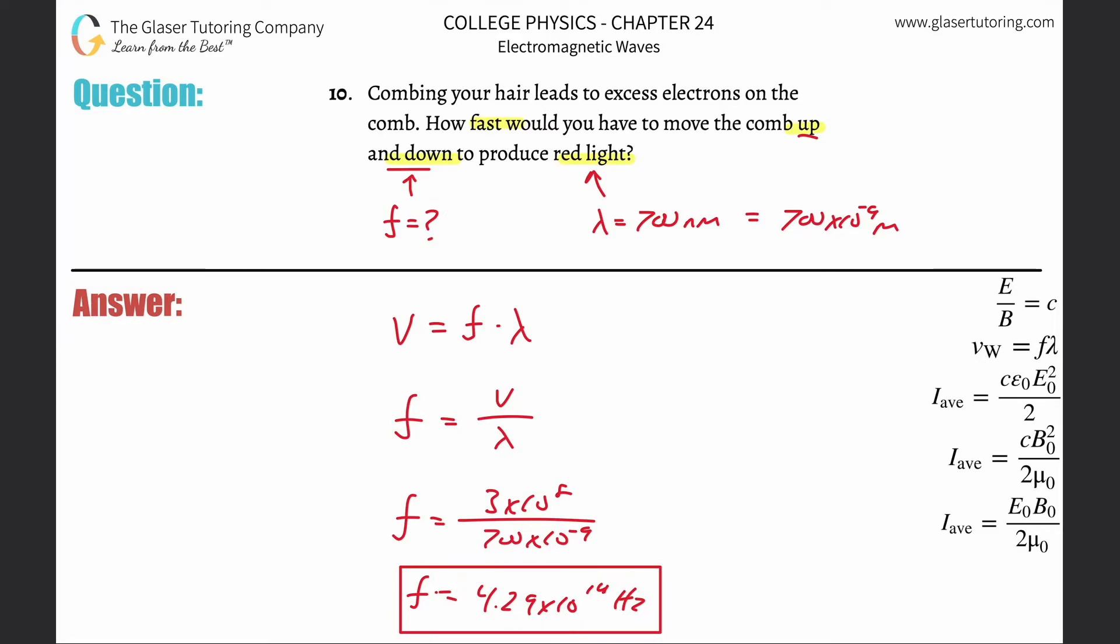So you'd have to move your comb up and down at four times 10 to the 14th cycles per second, which is kind of crazy, right? What would that even be? 429 trillion? Something like that? No, 42.9 trillion.